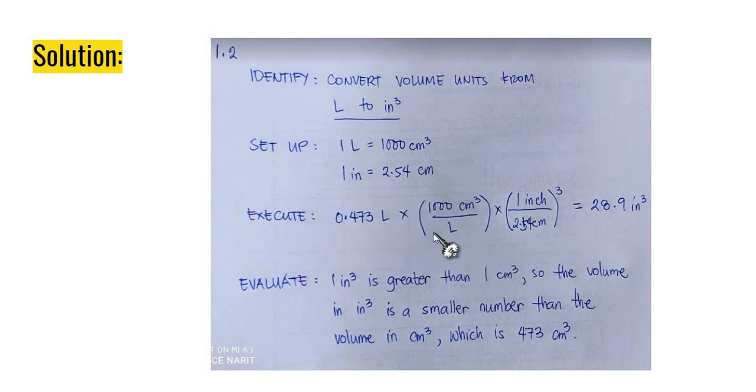That we can come up to a cubic inch in our execution. This is our equation. Liter will be canceled because this quantity here is divided by a liter. And then, cubic centimeter will be canceled because a cubic centimeter here is divided by cubic inch. Cancel, cancel. The remaining unit will be cubic inch. The answer is 28.9 cubic inch. And then, evaluate. You analyze. 1 cubic inch is greater than 1 cubic centimeter. So, the volume in cubic inch is a smaller number than the volume in cubic centimeter, which is 473 cubic centimeter. That's the solution for problem 1.2.